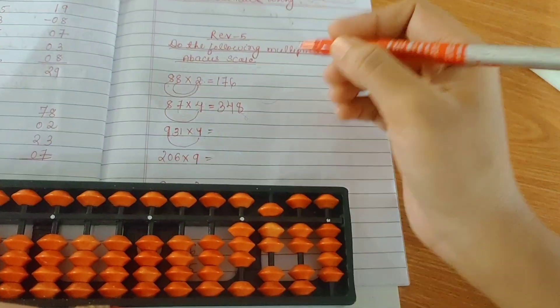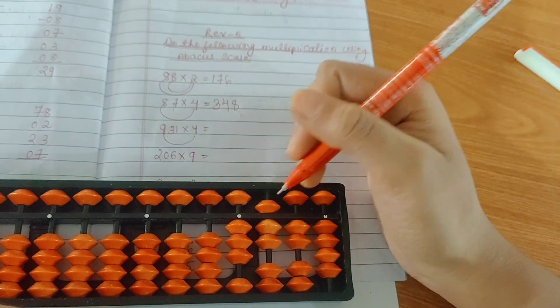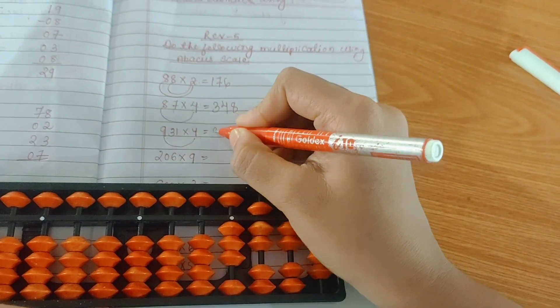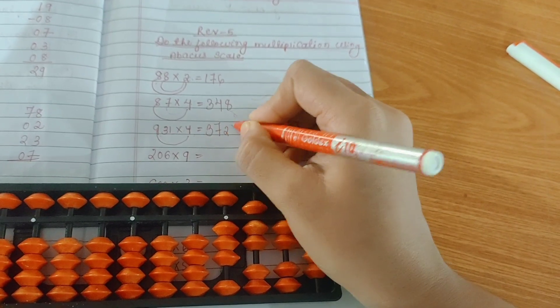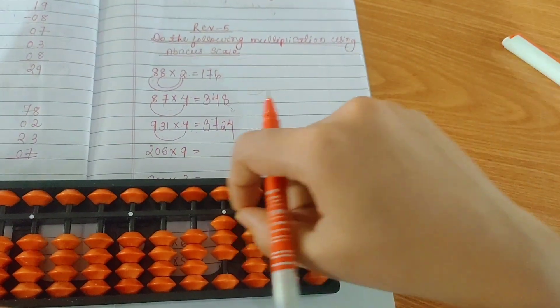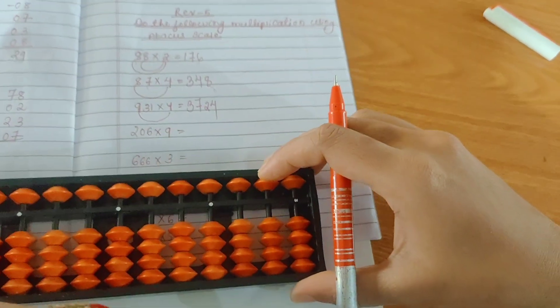Understood? The answer is 3,724. Clear the scale. See the next question.